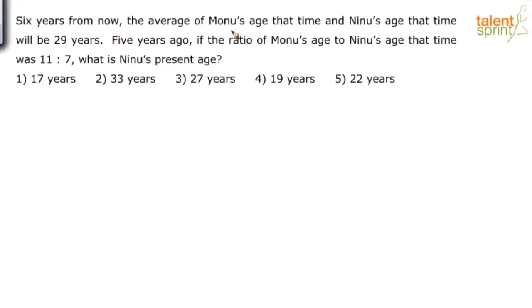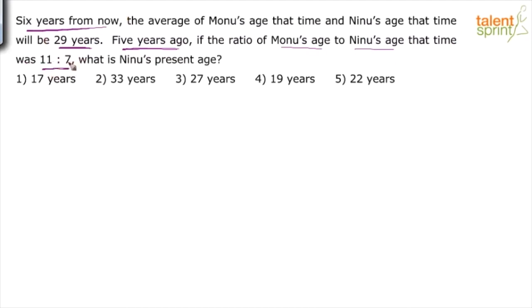Six years from now, the average of Mono's age and Nino's age at that time will be 29 years. Five years ago, the ratio of Mono's age to Nino's age was 11 is to 7. So Mono's age minus 5 and Nino's age minus 5 gives a ratio of 11 to 7. From this data, we need to find out Nino's present age. There are two equations and two unknowns, which we can solve.